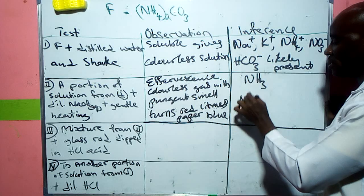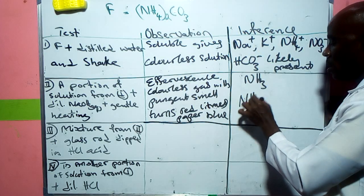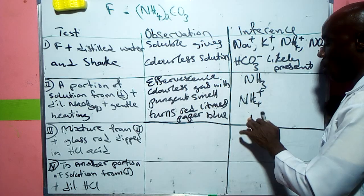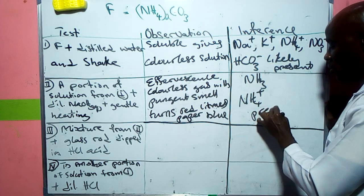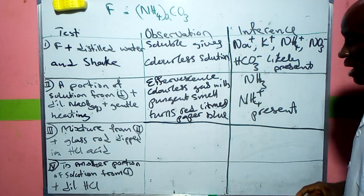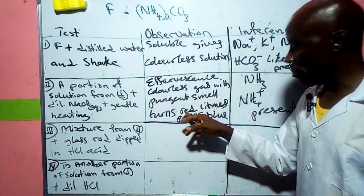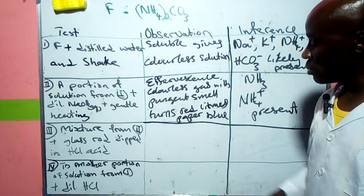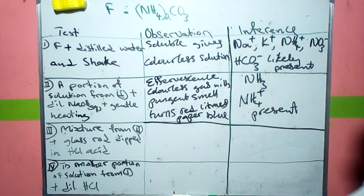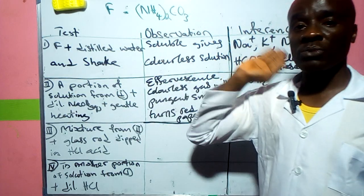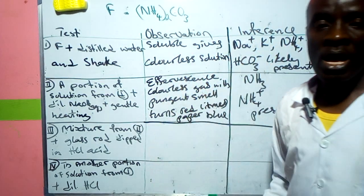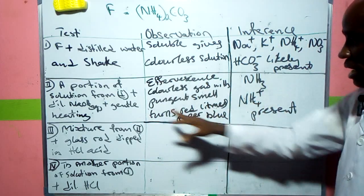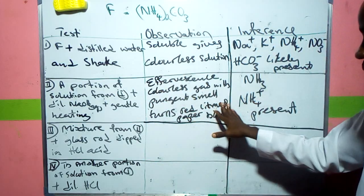You can say present because ammonia is the only gas that can give this positive test by turning red litmus paper toward blue. What we have here is that all ammonium salts, when you heat them with an alkaline or base, will liberate ammonia. That is the chemical reaction that's going on here.